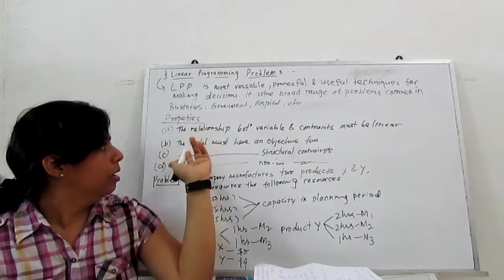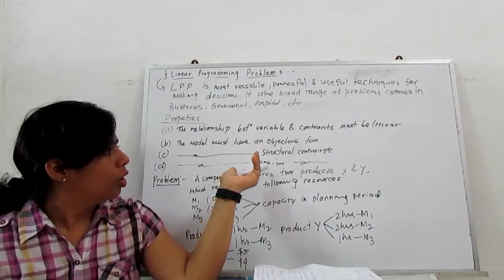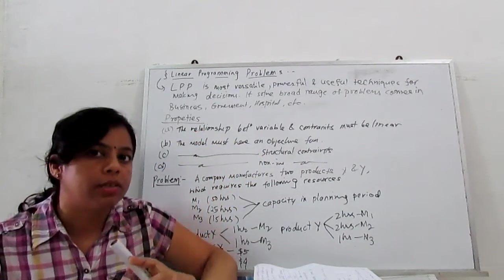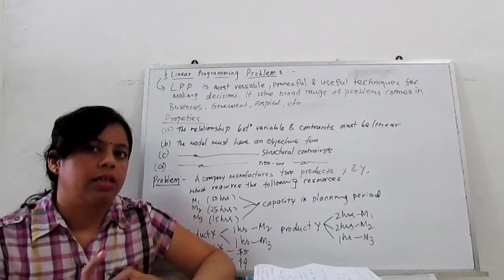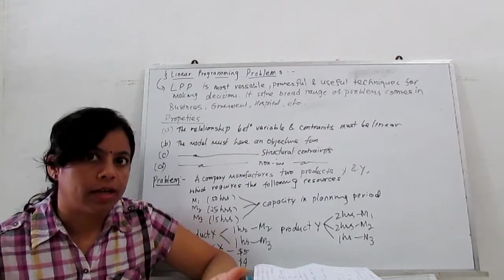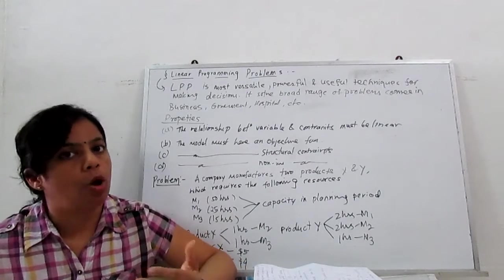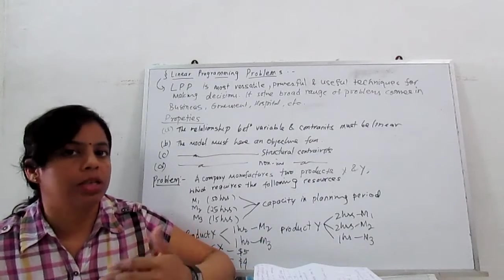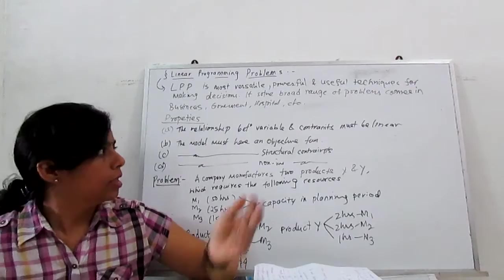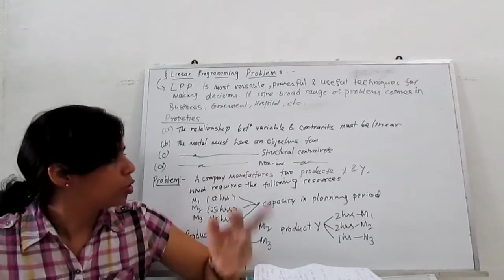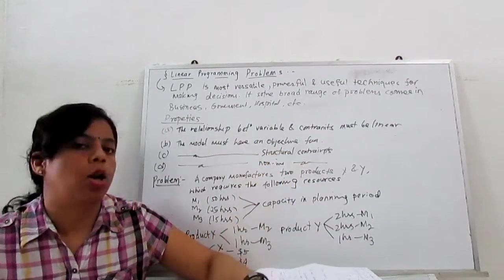Next, all the models must have non-negative constraints, meaning our variables X or Y or whatever we consider are greater than 0 or maybe 0. Because if they go negative, the objective function doesn't make sense. So always they are non-negative.